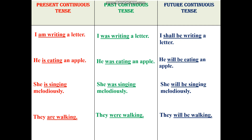We see the usage of the verb in the -ing form. With 'I', we use 'am'. In the past tense, we use 'was' plus verb plus -ing. And in future continuous, we use 'shall' with 'I', and 'shall be' plus verb plus -ing. Similarly, we see the same pattern in all the other examples.